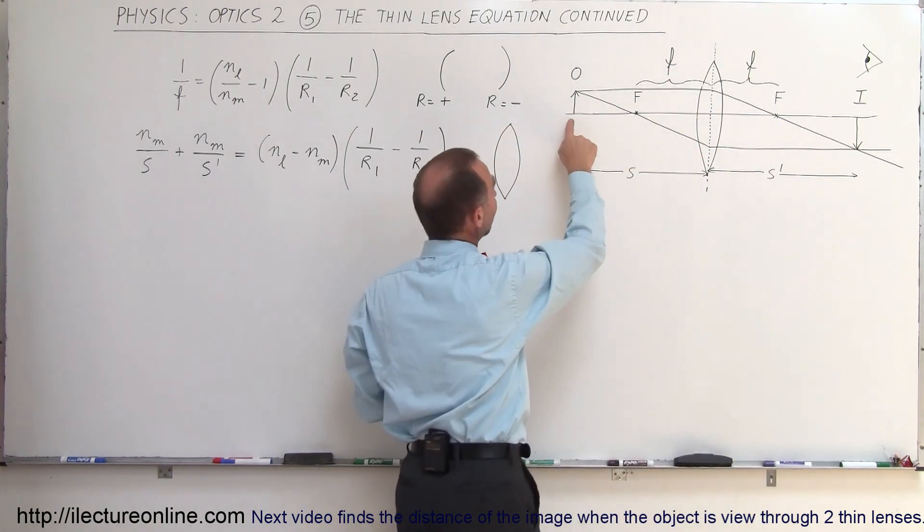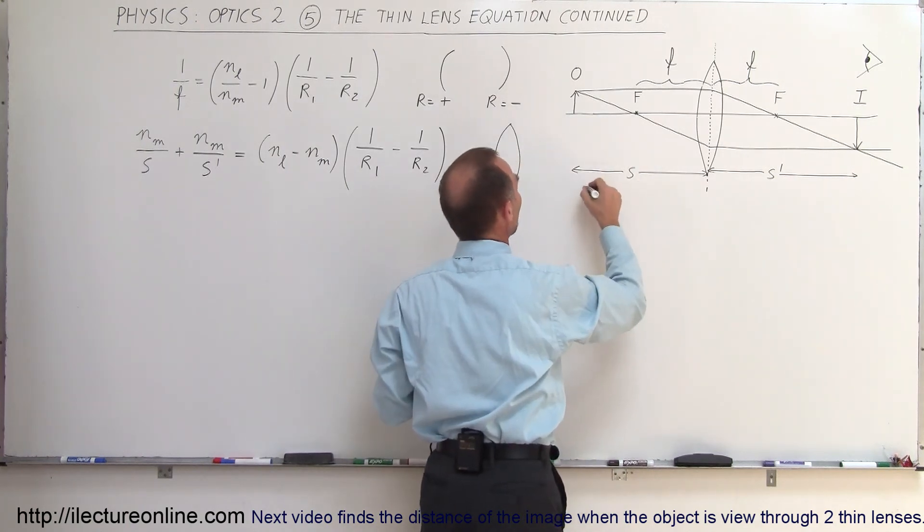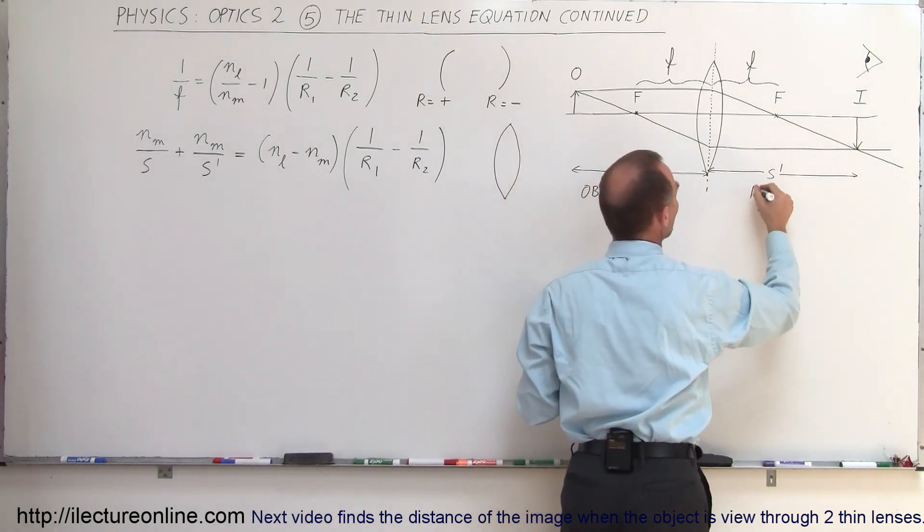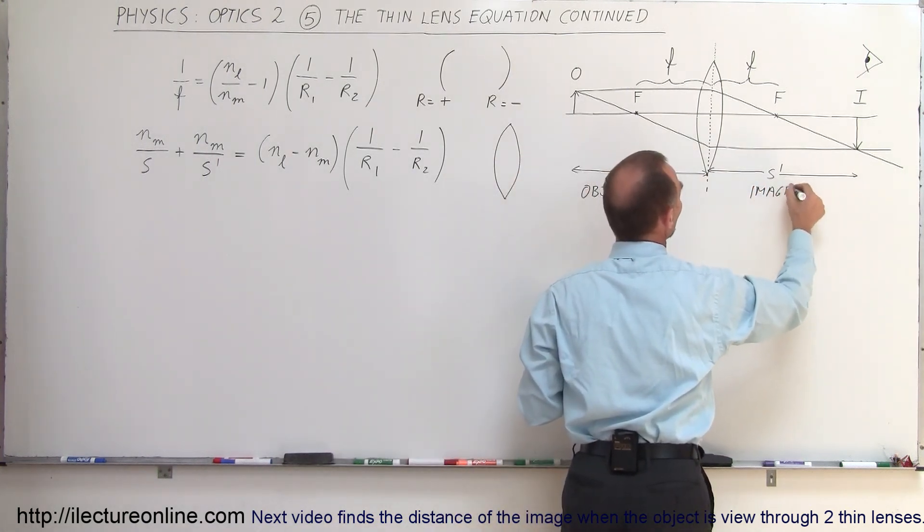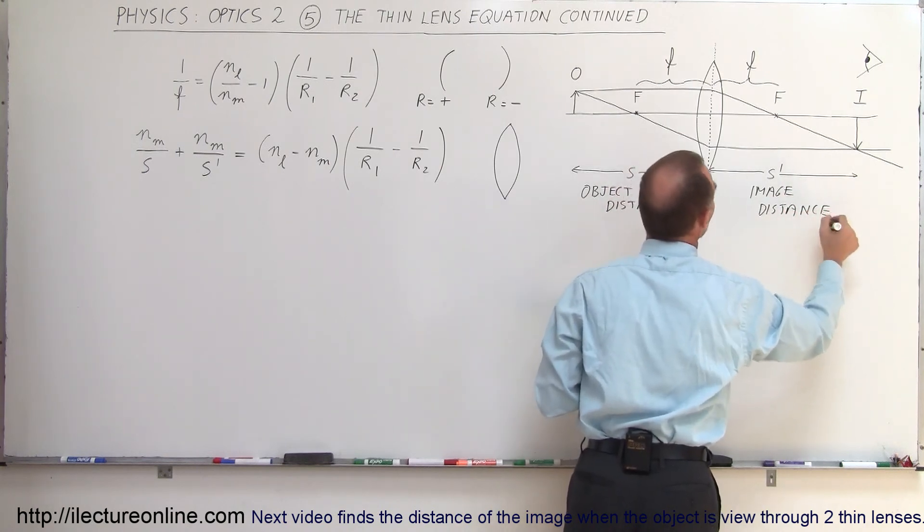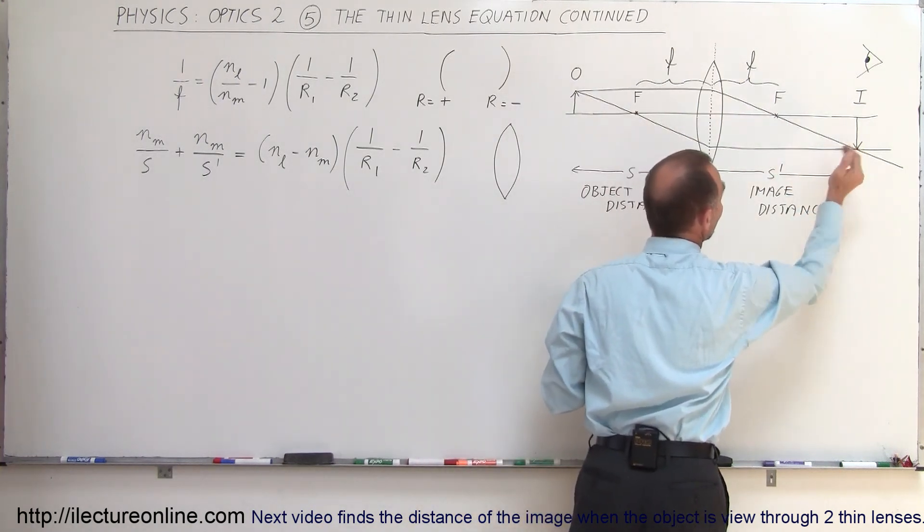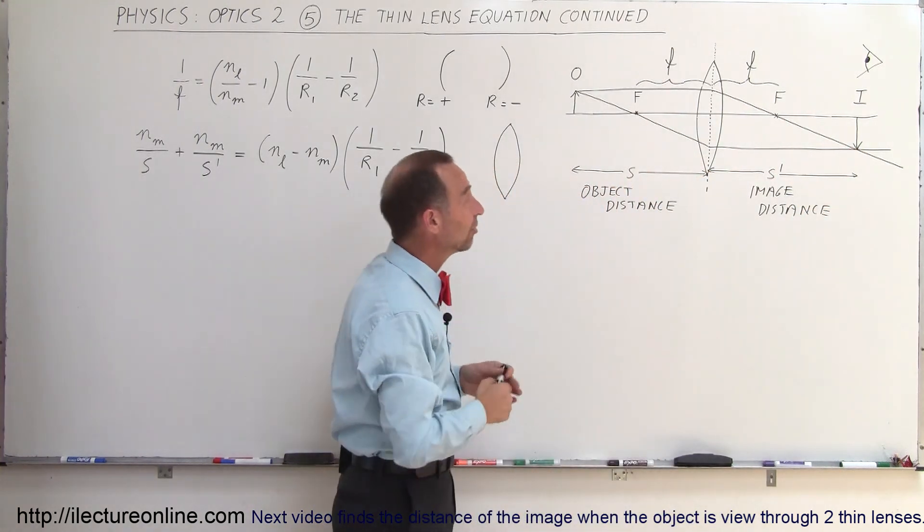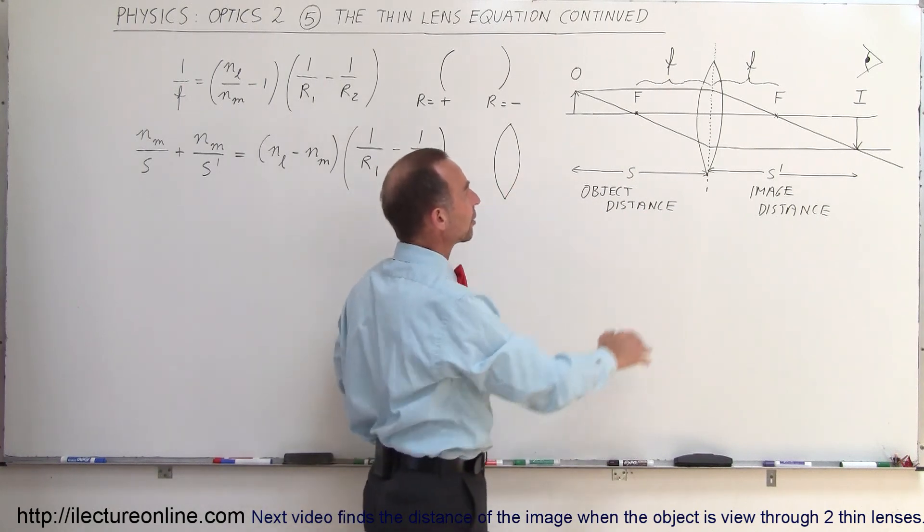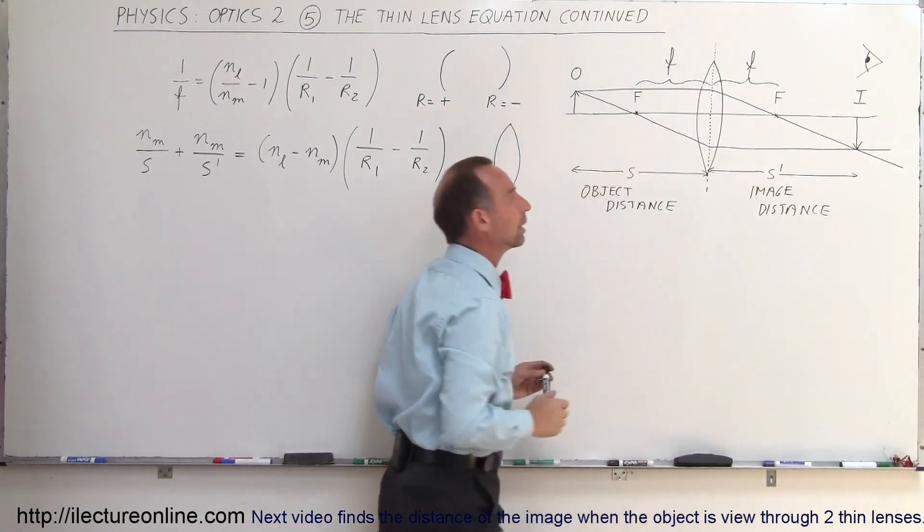Notice that the object is at the object distance away from the lens, which we call S. And S prime is the image distance, the distance from the lens to where the image is formed. In previous videos I showed how we can find the image position by following certain criteria and equations. We're not going through that now, but you can follow a ray diagram that indicates where the image will occur.